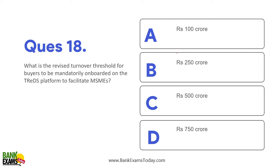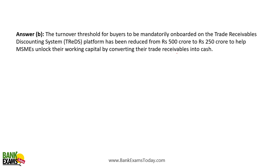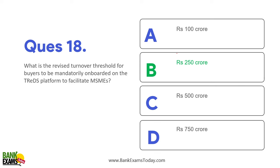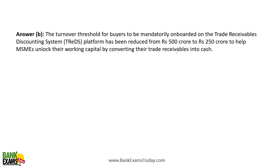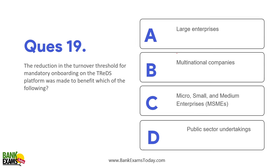What is the revised turnover threshold for buyers to be mandatorily onboarded on the TREDS platform? It used to be ₹500 crores but now it is ₹250 crores. To register on the TREDS platform, it is compulsory if your turnover is more than ₹250 crores. This reduction was made to benefit MSMEs — micro, small and medium enterprises.